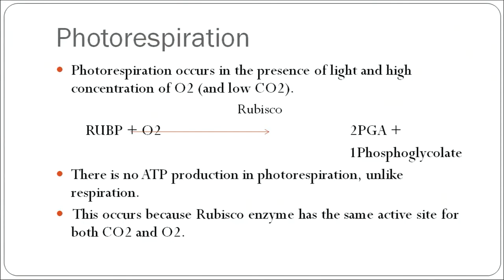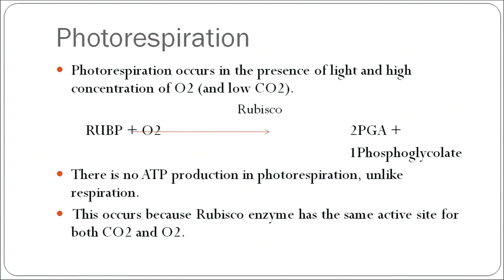Another essential aspect of respiration is photorespiration. As the name signifies, photorespiration is the respiration that takes place in the presence of light. It generally works when there are high levels of oxygen and low levels of carbon dioxide. Rubisco is an enzyme whose active site has affinity for both carbon dioxide and oxygen, so depending on what is available in the environment, rubisco will work accordingly. If photorespiration has to happen, there will be high levels of oxygen and low levels of carbon dioxide.